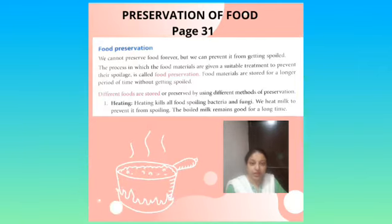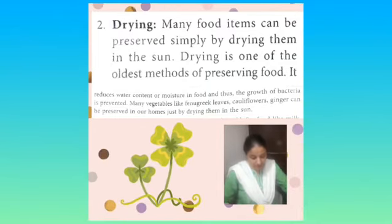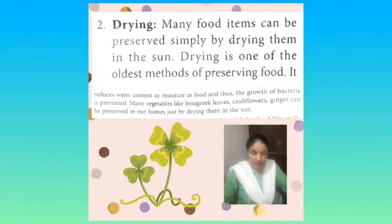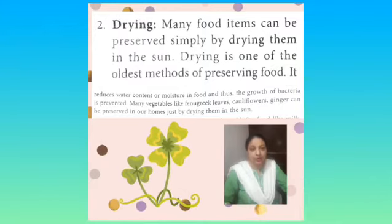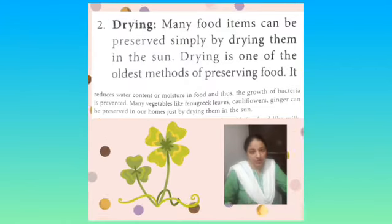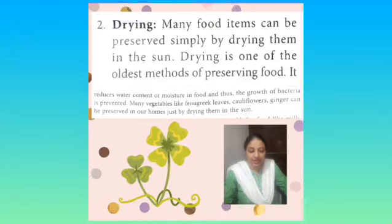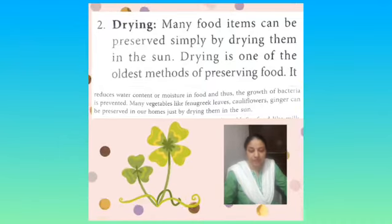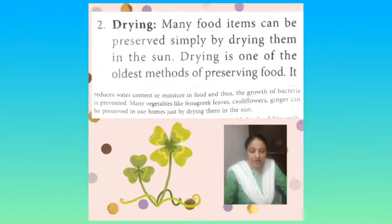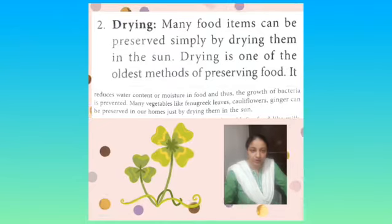Heating is a process of preservation. Whatever bacteria, fungi, or any germs are present in food will die. Our food can then be used for a long time. Next is drying method: 'Many food items can be preserved simply by drying them in the sun. Drying is one of the oldest methods of preserving food.' It reduces water content or moisture in food, and thus the growth of bacteria is prevented.